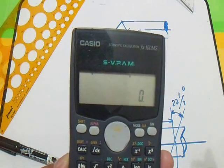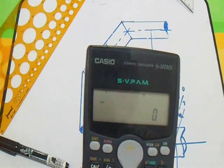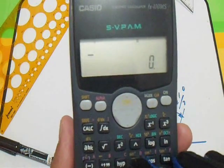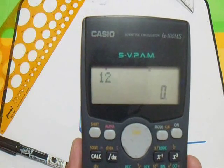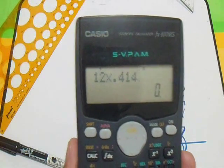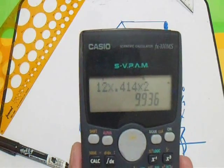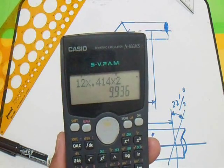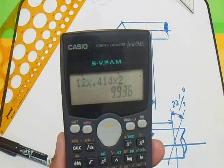The formula is: radius multiplied by 0.414, and multiply also by 2. For example, we have a 12-inch radius. So 12 multiplied by 0.414 and multiplied by 2. This gives our answer for the length of A in inches: 9.936 inches.